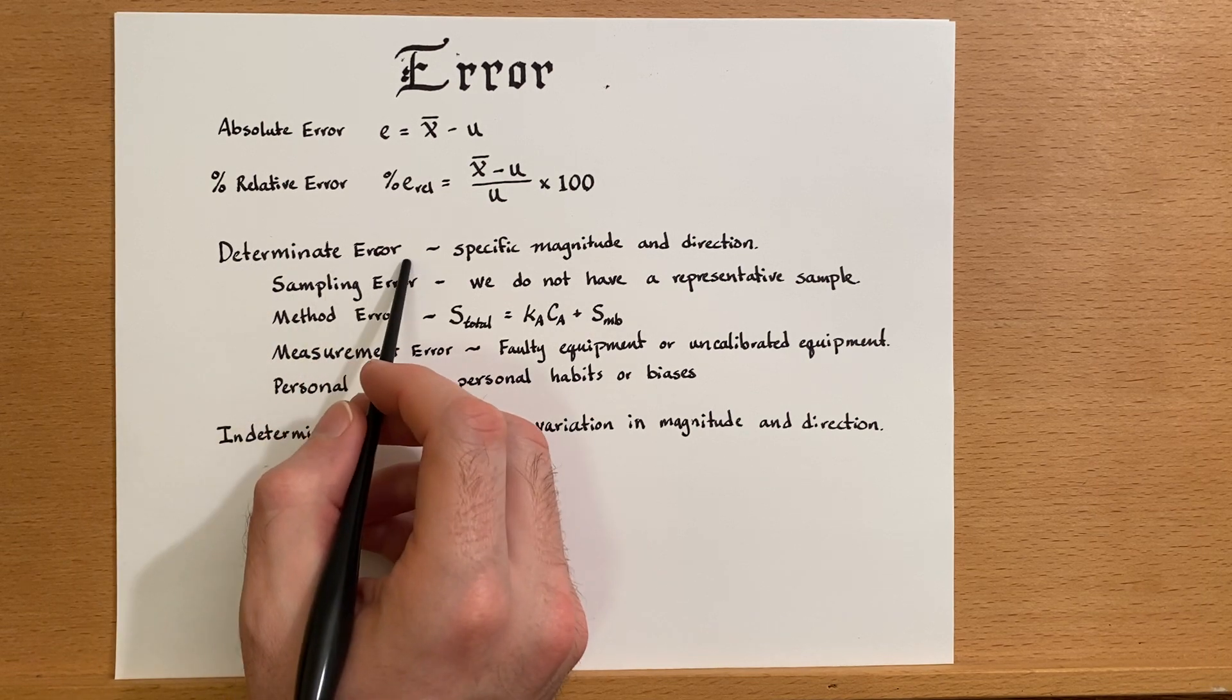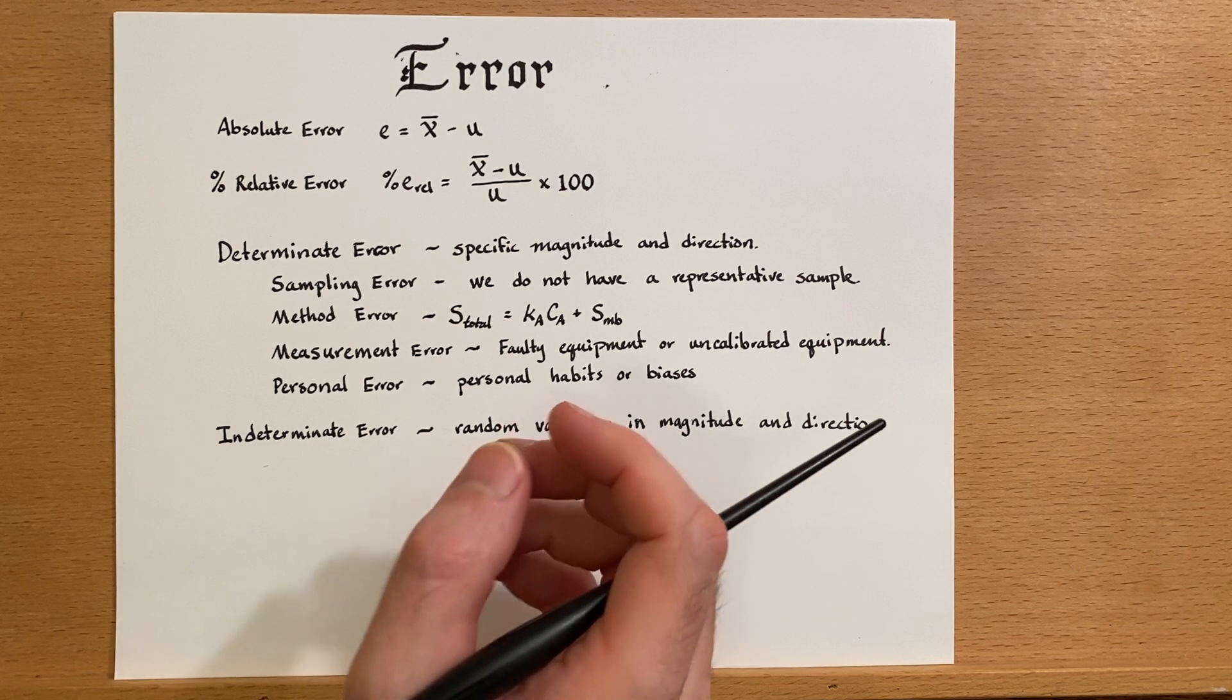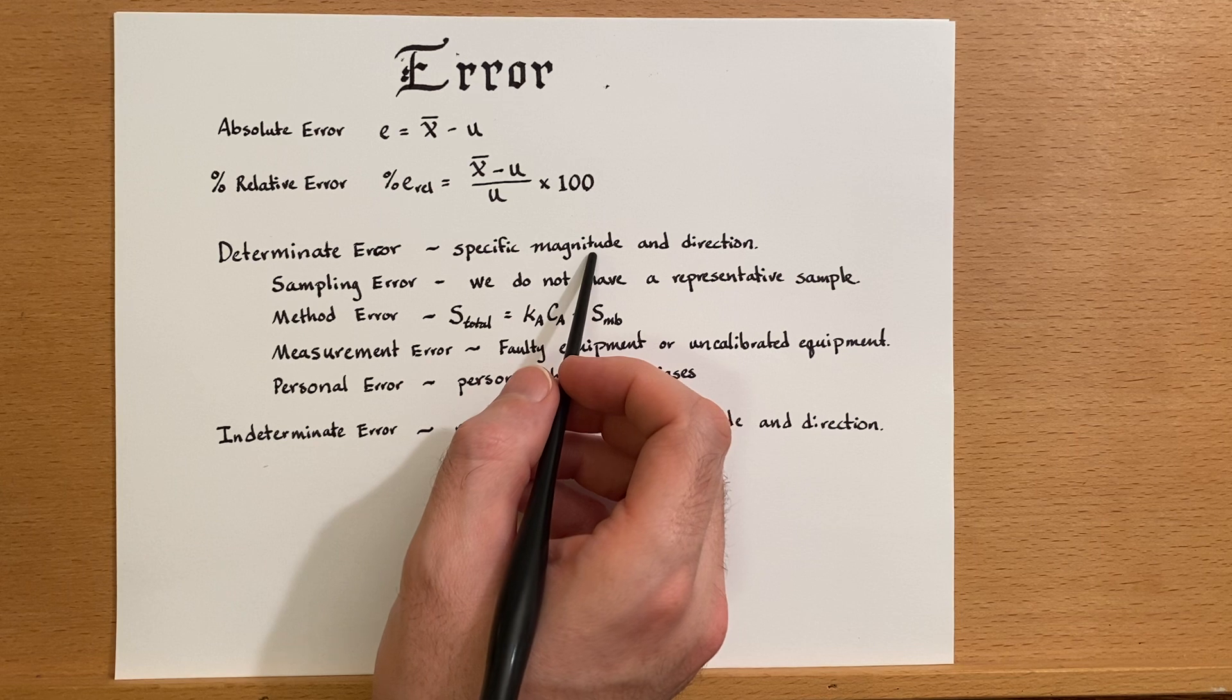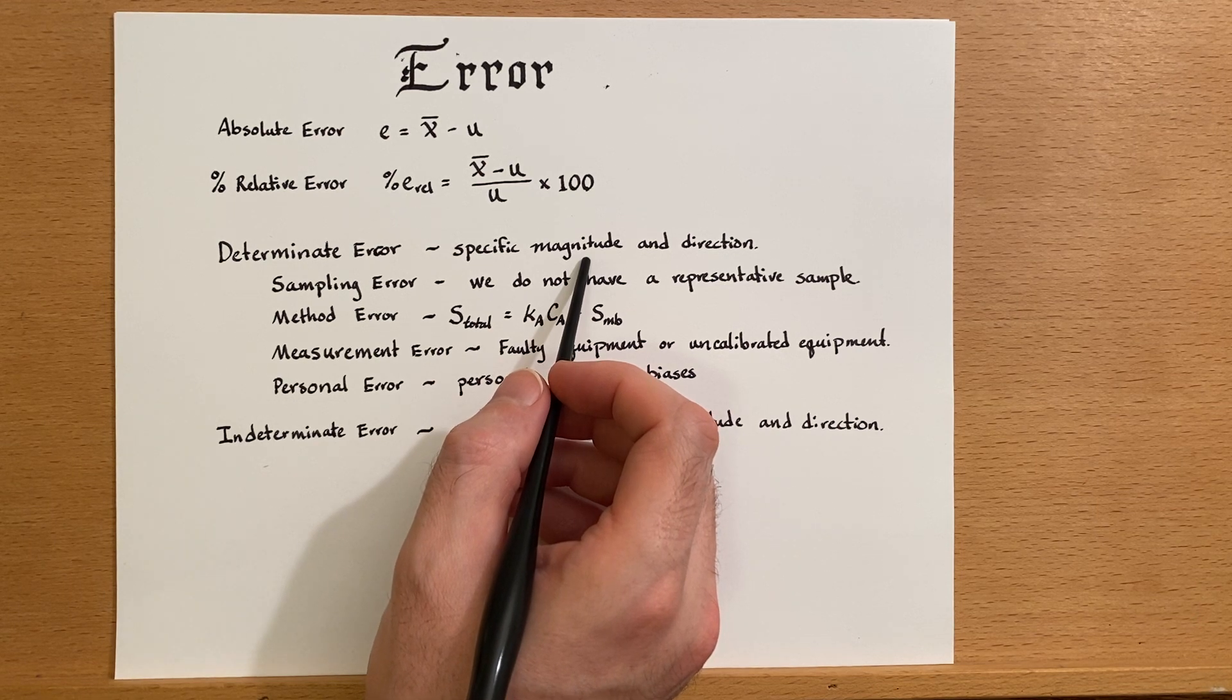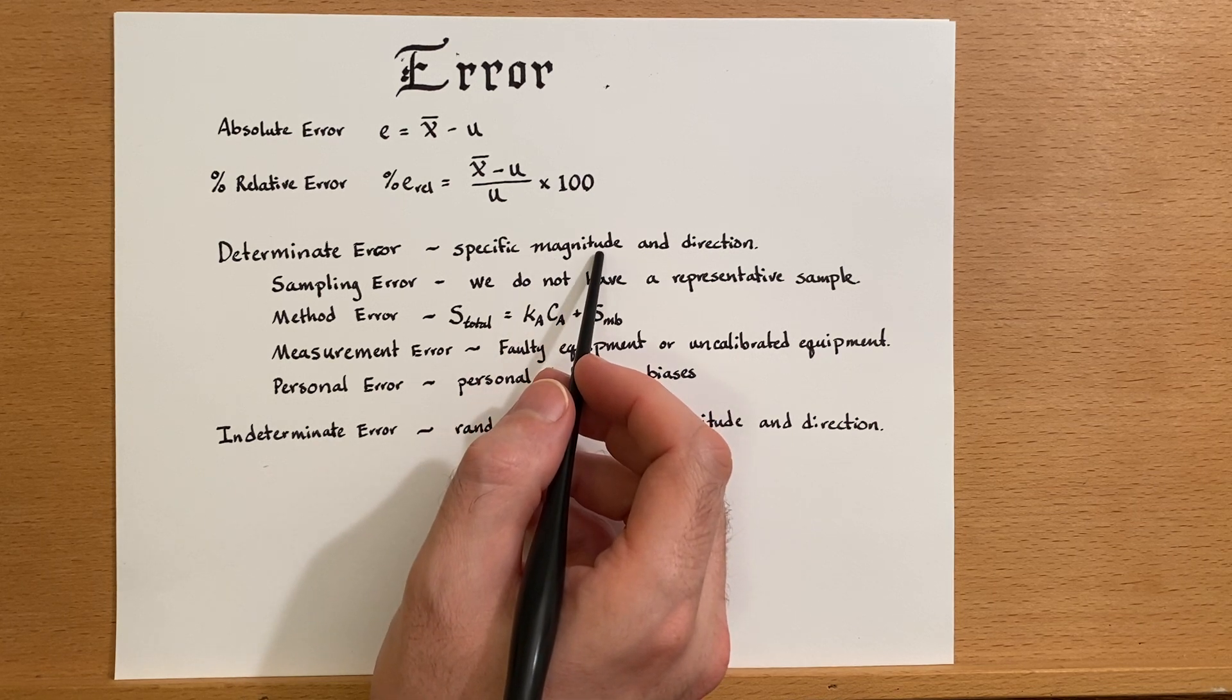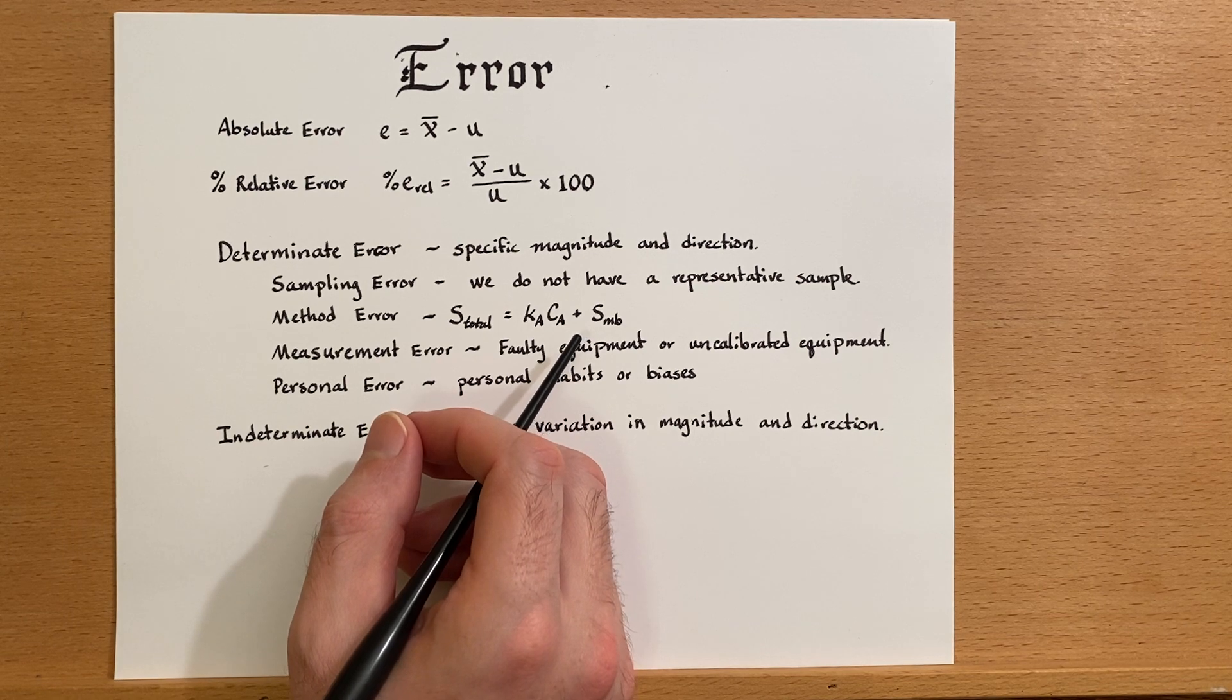For now, let's look at two different types of error: there's determinant error and of course indeterminate error. Determinant error has a specific magnitude and direction. That means it always has the same amount of error in either the positive direction or it's always in the negative direction. This magnitude could be a percentage as well.